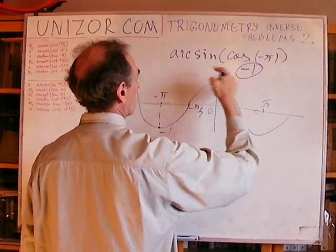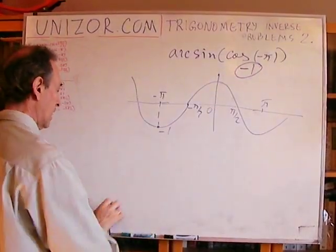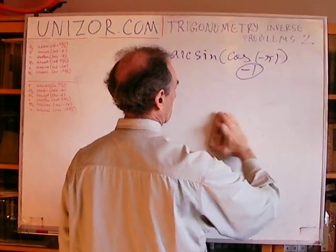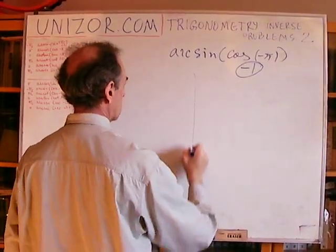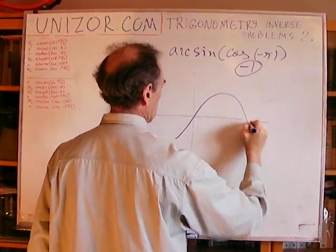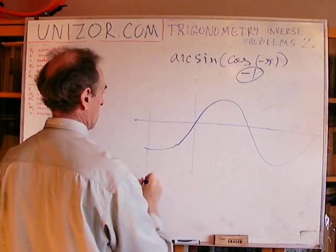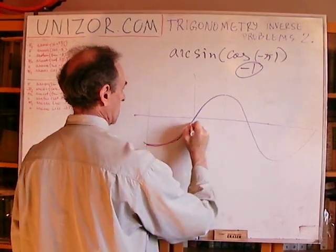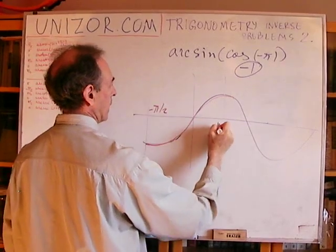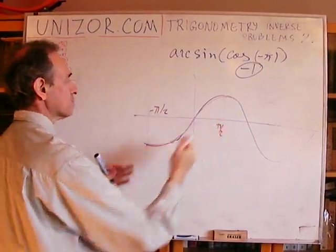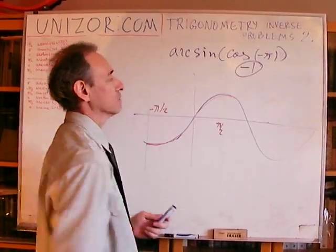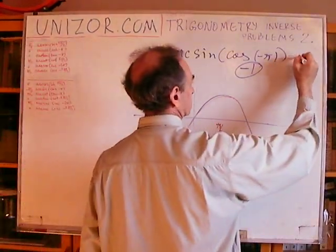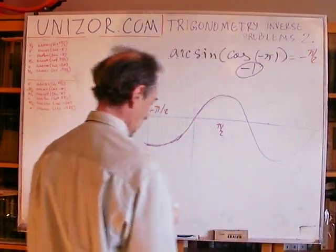So I have to find arc sine of minus 1. The graph of the sine is invertible from minus π/2 to π/2 — that's the area where the sine is monotonic. Only within these boundaries do we look for an angle whose sine is equal to minus 1. Obviously, it's minus π/2. So that's the answer.